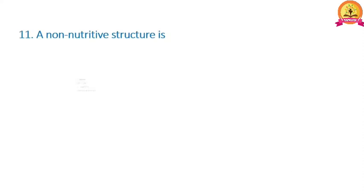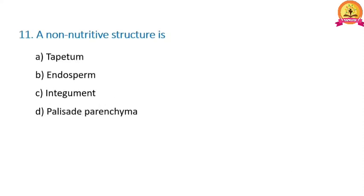Next: a non-nutritive structure is? Tapetum is a nutritive tissue providing nourishment for developing pollen grains. Endosperm is also a nutritive tissue providing nourishment for the developing embryo. Palisade parenchyma, found in leaves, is also nutritive in function. But the integument is a part of the ovule and is a protective covering — it does not provide any nourishment. Therefore, integument is the correct option, option C.